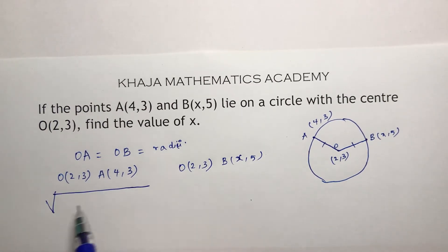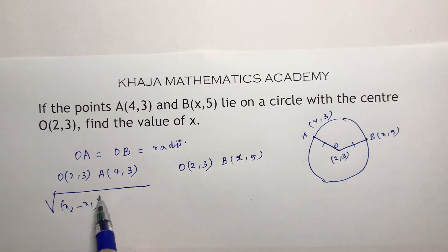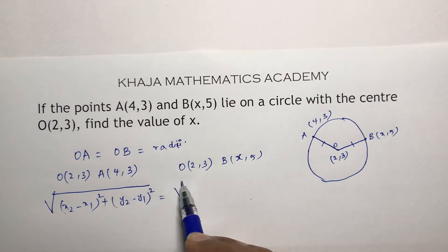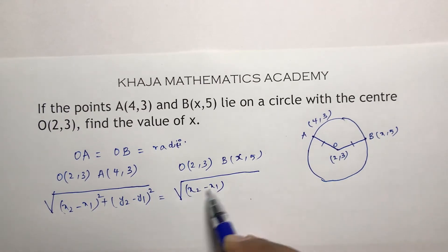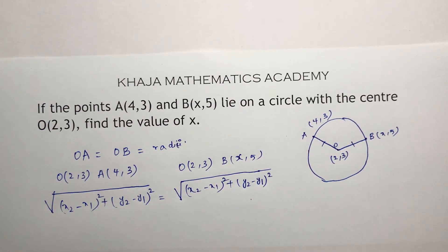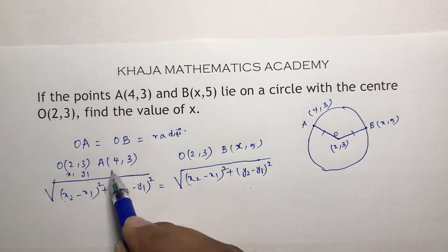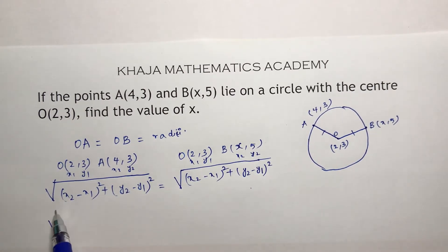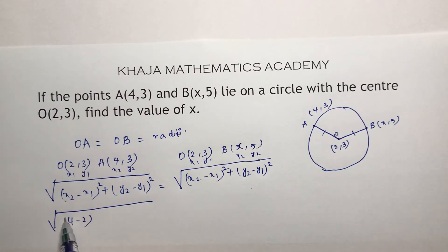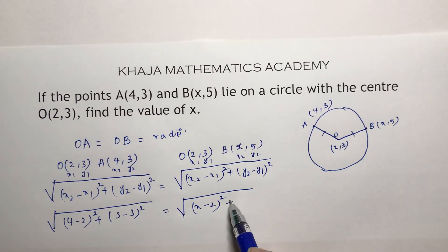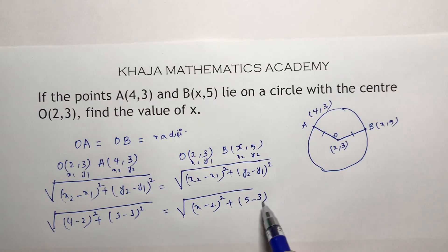The distance formula is: under root of (x2 minus x1) whole square plus (y2 minus y1) whole square. For OA: under root of (4 minus 2) whole square plus (3 minus 3) whole square. For OB: under root of (x minus 2) whole square plus (5 minus 3) whole square. Setting OA equal to OB.